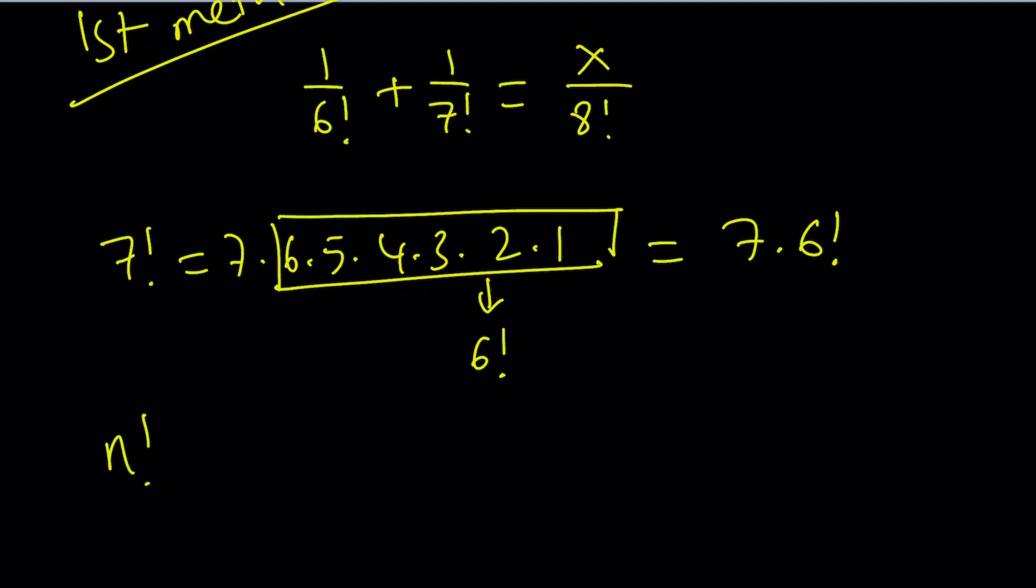In general, n factorial can always be written as n times n minus 1 factorial. And if you replace n with 1, you actually get 0 factorial from here, which is kind of interesting. So we have these properties of factorials. Let's go ahead and simplify this expression.